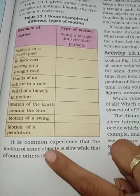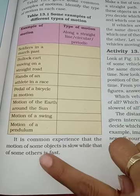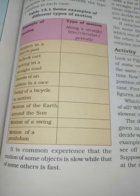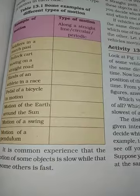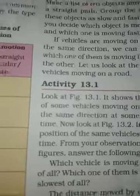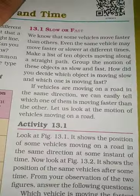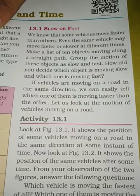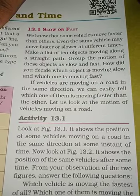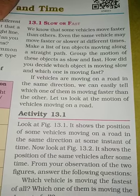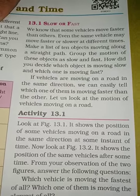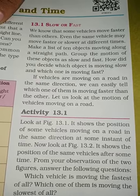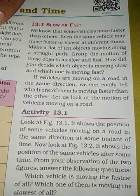It is common experience that the motion of some objects is slow while that of others is fast. We know that some vehicles move faster than others, and even the same vehicle may move faster or slower at different times.